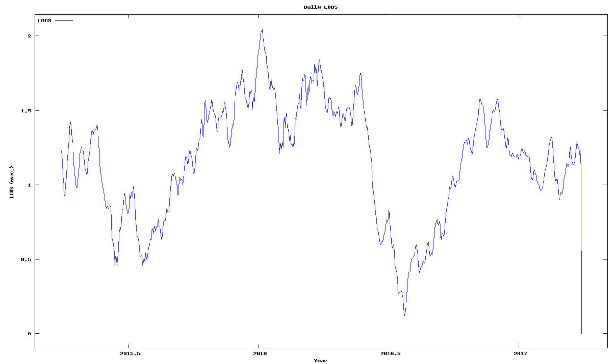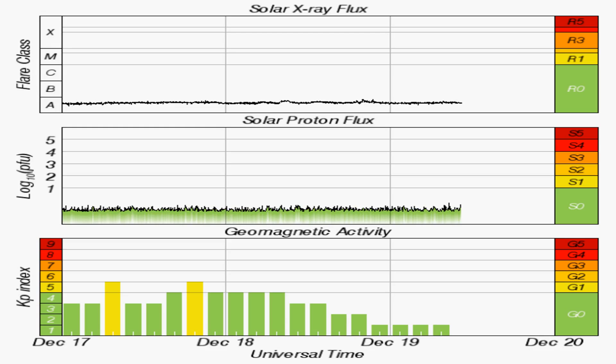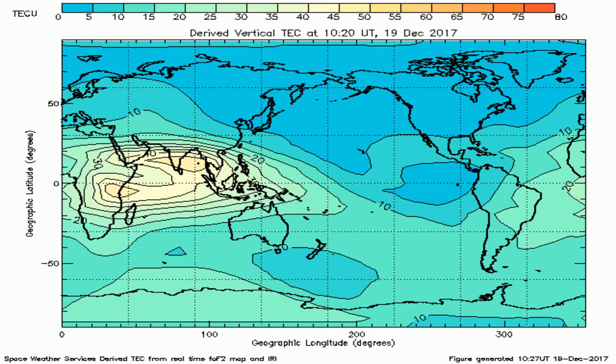And now we see changes in the speed of the rotation of the Earth, along with solar x-ray flux, solar proton flux, geomagnetic disturbances, and another graph of total electron content across the Earth.